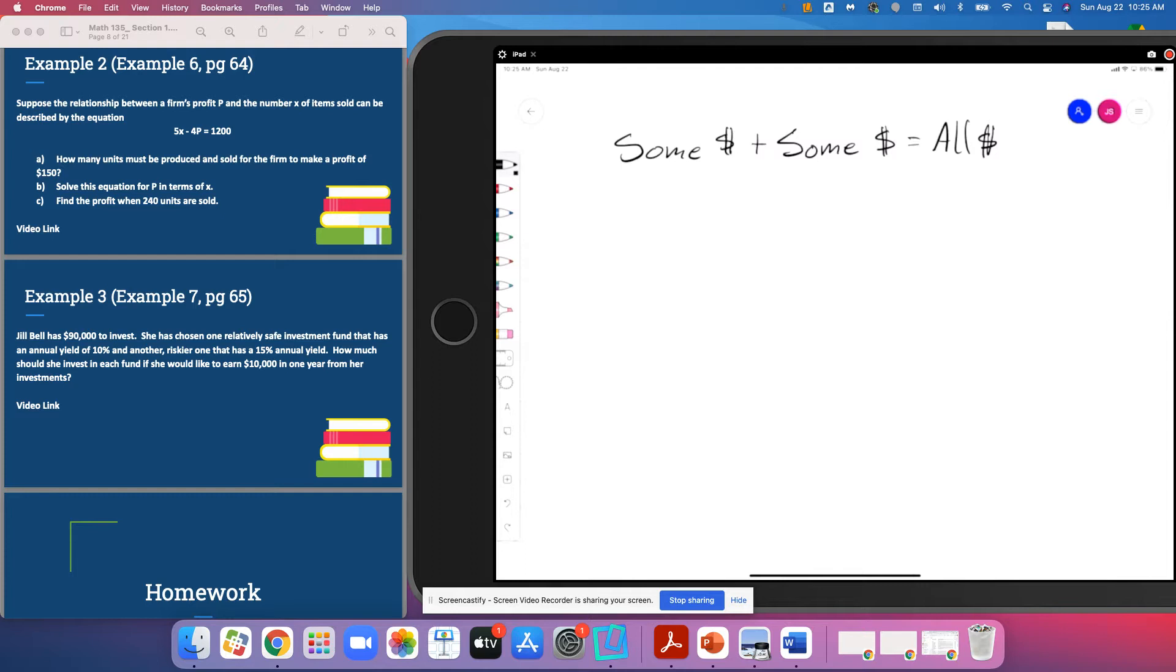We've got a woman named Jill Bell who has $90,000 to invest. She has chosen one relatively safe investment fund that has an annual yield of 10% and another riskier one that has a 15% annual yield. How much should she invest if she would like to earn $10,000 in one year from her investments?